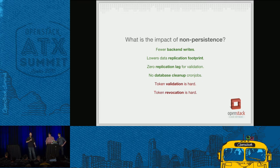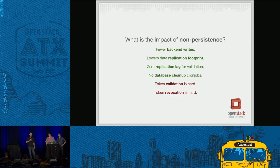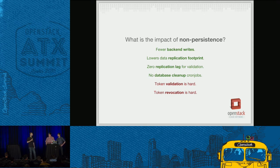Fernet has some downsides though — token validation is suddenly kind of difficult. We have to do a lot more work to validate Fernet tokens. With PKI tokens, all we had to do was check the signature, decode it, and return it. With UUID tokens, all we had to do was a single read from the database. With Fernet, we have to do a whole bunch of reads and rebuild that entire authentication and authorization context on every token validation.